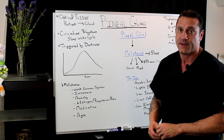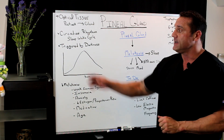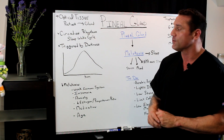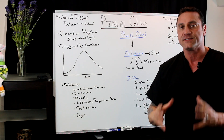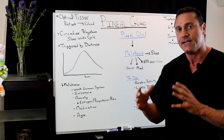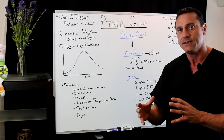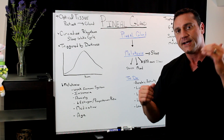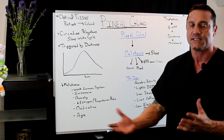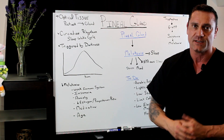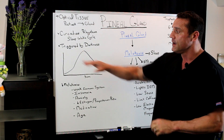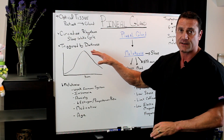One of the functions of the pineal gland is that it's involved with the circadian rhythm — our sleep-wake cycle. It's activated in dim light, and it slows down its production of melatonin once we arise, especially with the sun coming up. It's triggered by darkness.